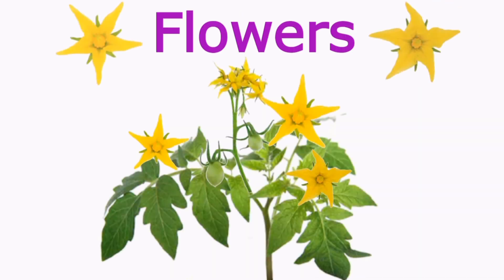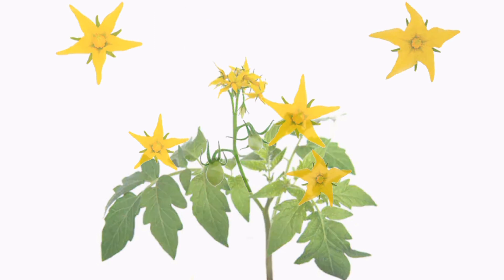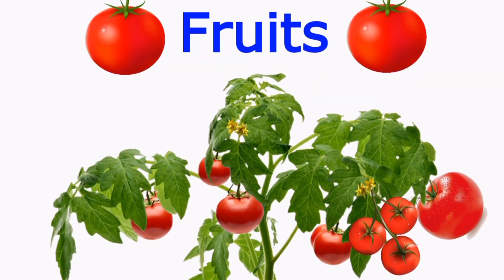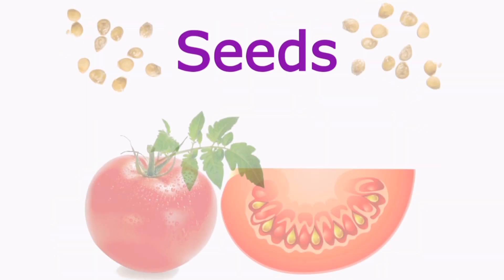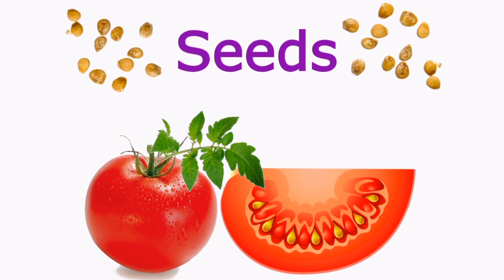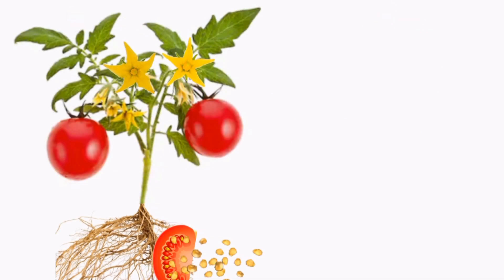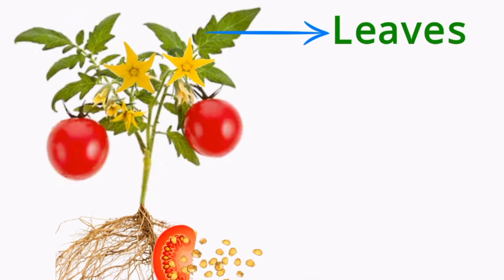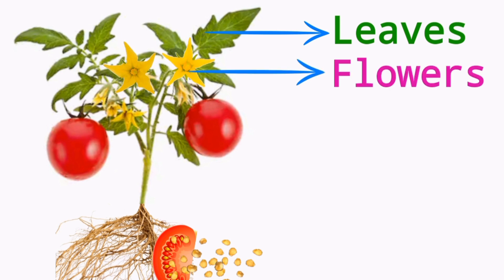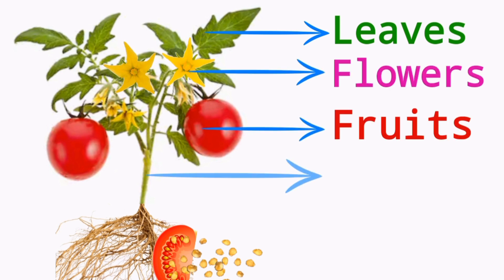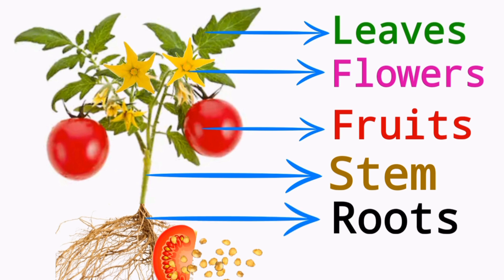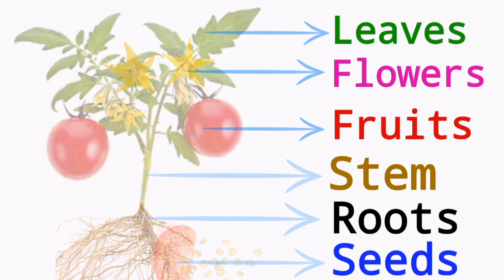Other parts of the plant are flowers, fruits, and seeds. All parts of the plant are: leaves, flowers, fruits, stem, roots, and seeds.